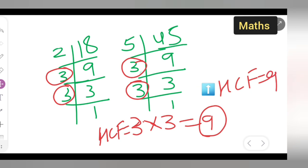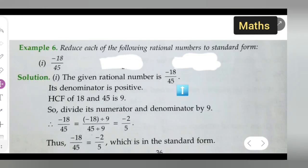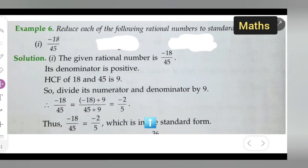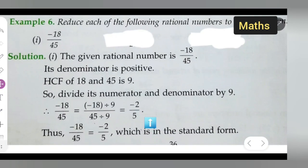So this is the way you get 9. So HCF of 18 and 45 is 9. So we need to divide its numerator and denominator by 9. So what we have to do is we have to divide this both numerator and denominator by 9. So minus 18 upon 45.